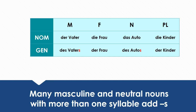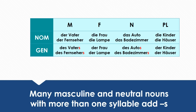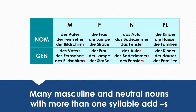You can also see two other changes: we add an S in the masculine form at the end of the noun, and we do the same in the neutral form. Adding an S at the end of the noun happens when there is more than one syllable. For example: 'der Fernseher' becomes 'des Fernsehers,' 'die Lampe' becomes 'der Lampe,' 'das Badezimmer' becomes 'des Badezimmers,' and 'die Häuser' becomes 'der Häuser.' More examples: 'der Bildschirm' → 'des Bildschirms,' 'die Straße' → 'der Straße,' 'das Fenster' → 'des Fensters,' 'die Familien' → 'der Familien.'